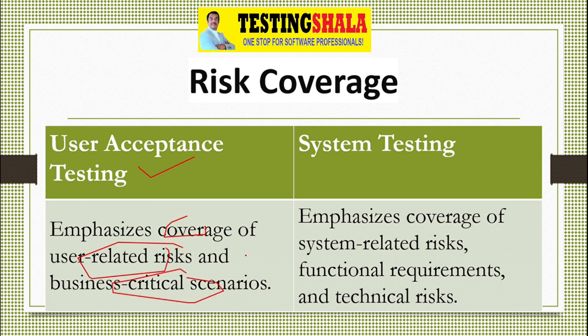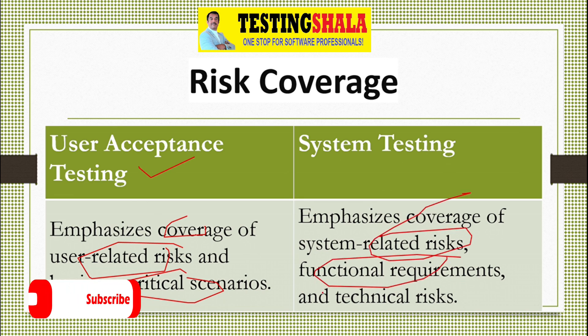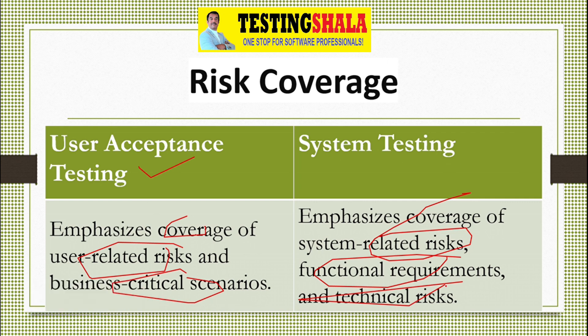Another key difference is risk coverage. In UAT, the emphasis is on coverage of user-related risks and business-critical scenarios. In system testing, we emphasize coverage of system-related risks, functional requirement risks, and technical aspects. These are the key differences between user acceptance testing and system testing.